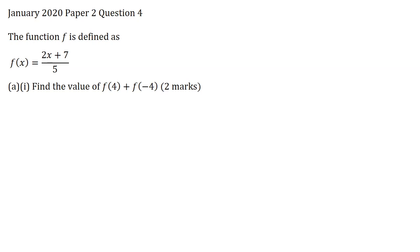In this video I will be solving January 2020 paper 2 question 4. The function f is defined as f of x is equal to 2x plus 7 all over 5, part A1.